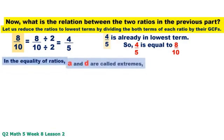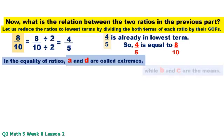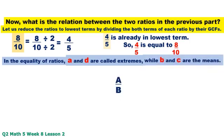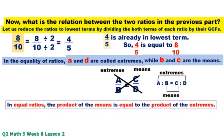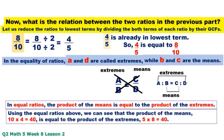In the equality of ratios, A and D are called extremes, while B and C are the means. In equal ratios, the product of the means is equal to the product of the extremes. Using the equal ratios above, we can see that the product of the means, 10 times 4 equals 40, is equal to the product of the extremes, 5 times 8 equals 40.